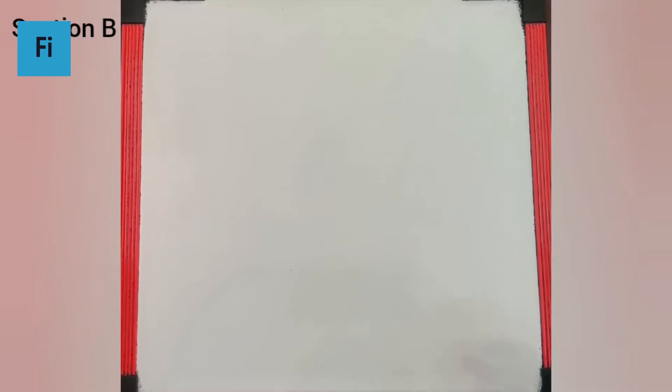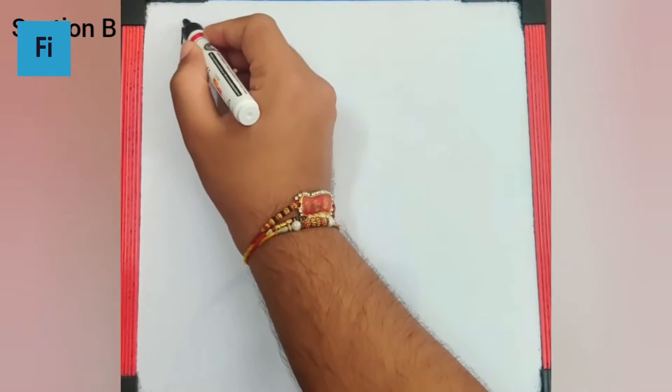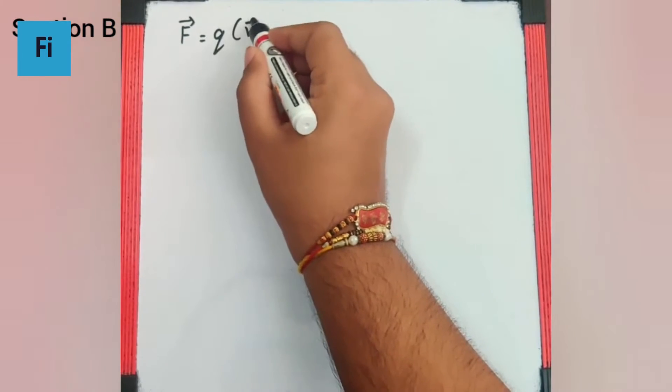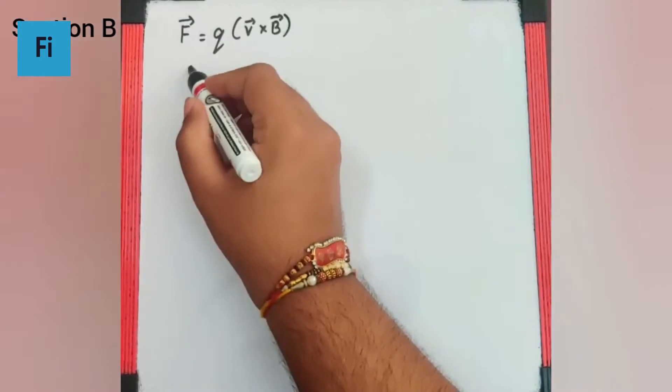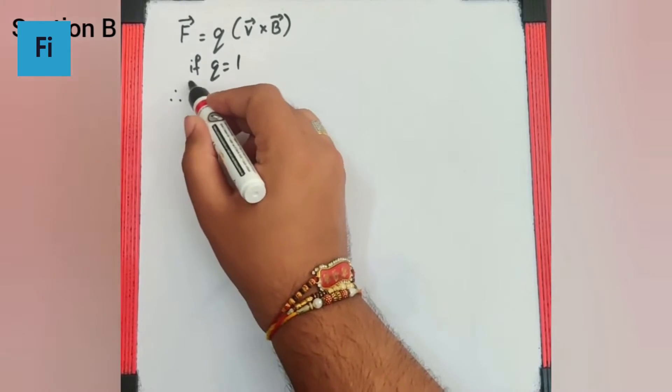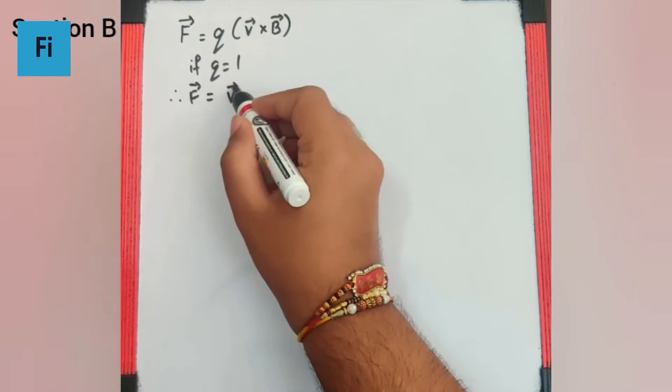Now they have given us F bar is equal to q times v bar cross B bar, and us mein q is 1, therefore F bar ho jayega v bar cross B bar.